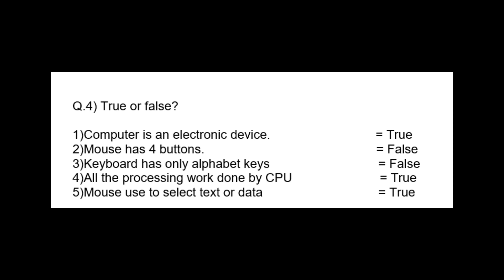Third keyboard has only alphabet keys. Answer false. Fourth all the processing work done by CPU. Answer true. Fifth mouse used to select text or data. Answer true.